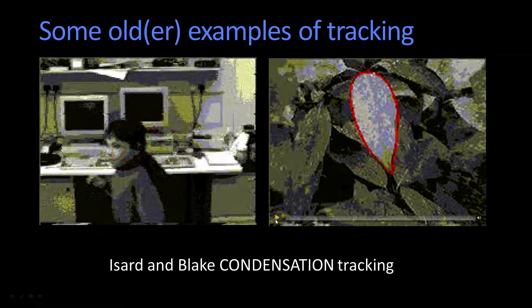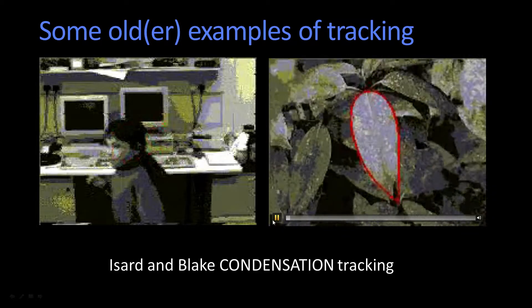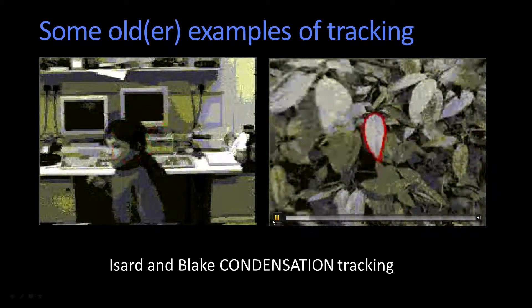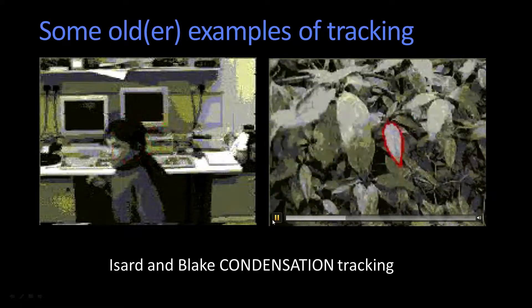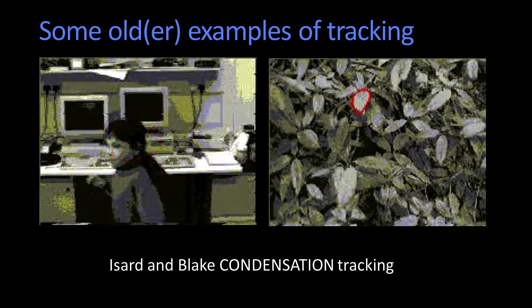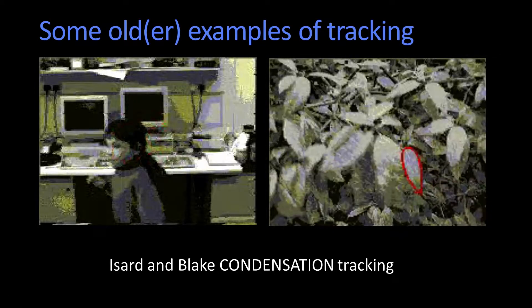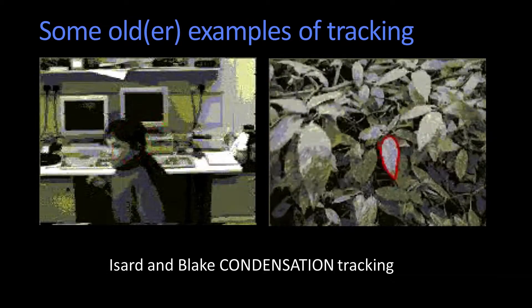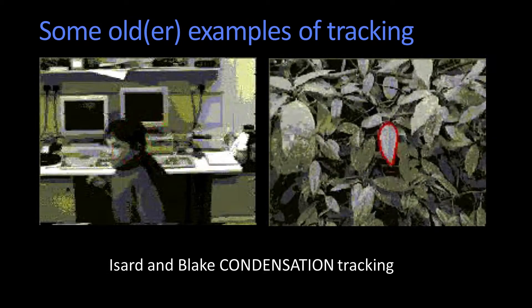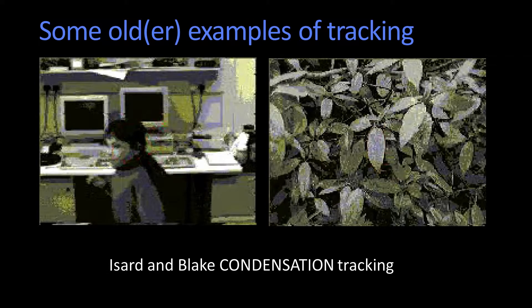Also from similar work is this leaf blowing in the wind. You'll notice as the camera zooms in and out and things move around, it does a pretty good job of sticking to the leaf. Both of these examples were work that Andrew Blake and Michael Izar did in a particular type of tracking that we'll cover not this lecture, but a couple of lessons from now.